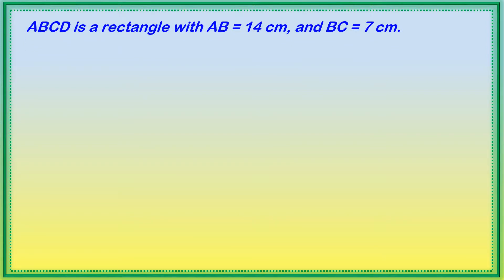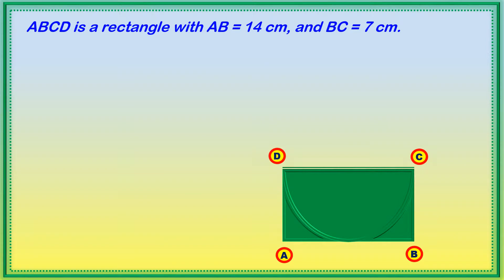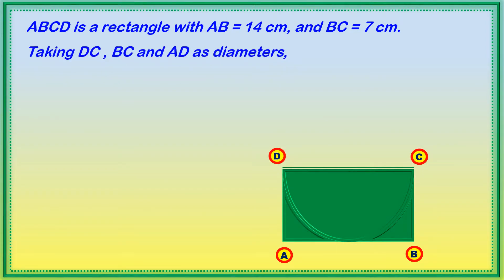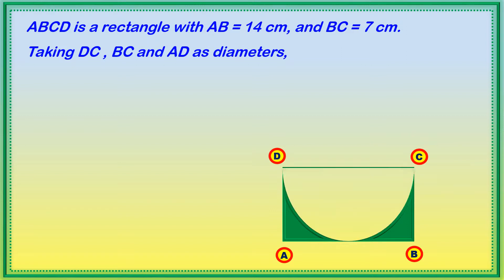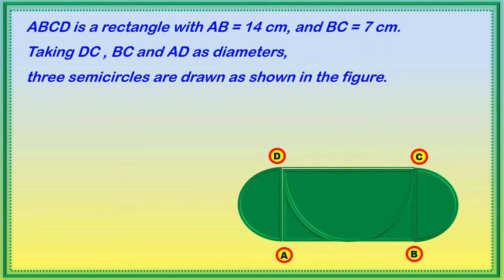ABCD is a rectangle with AB equal to 14 centimeters and BC equal to 7 centimeters. This is rectangle ABCD. Taking DC, BC, and AD as diameters, three semicircles are drawn as shown in the figure.